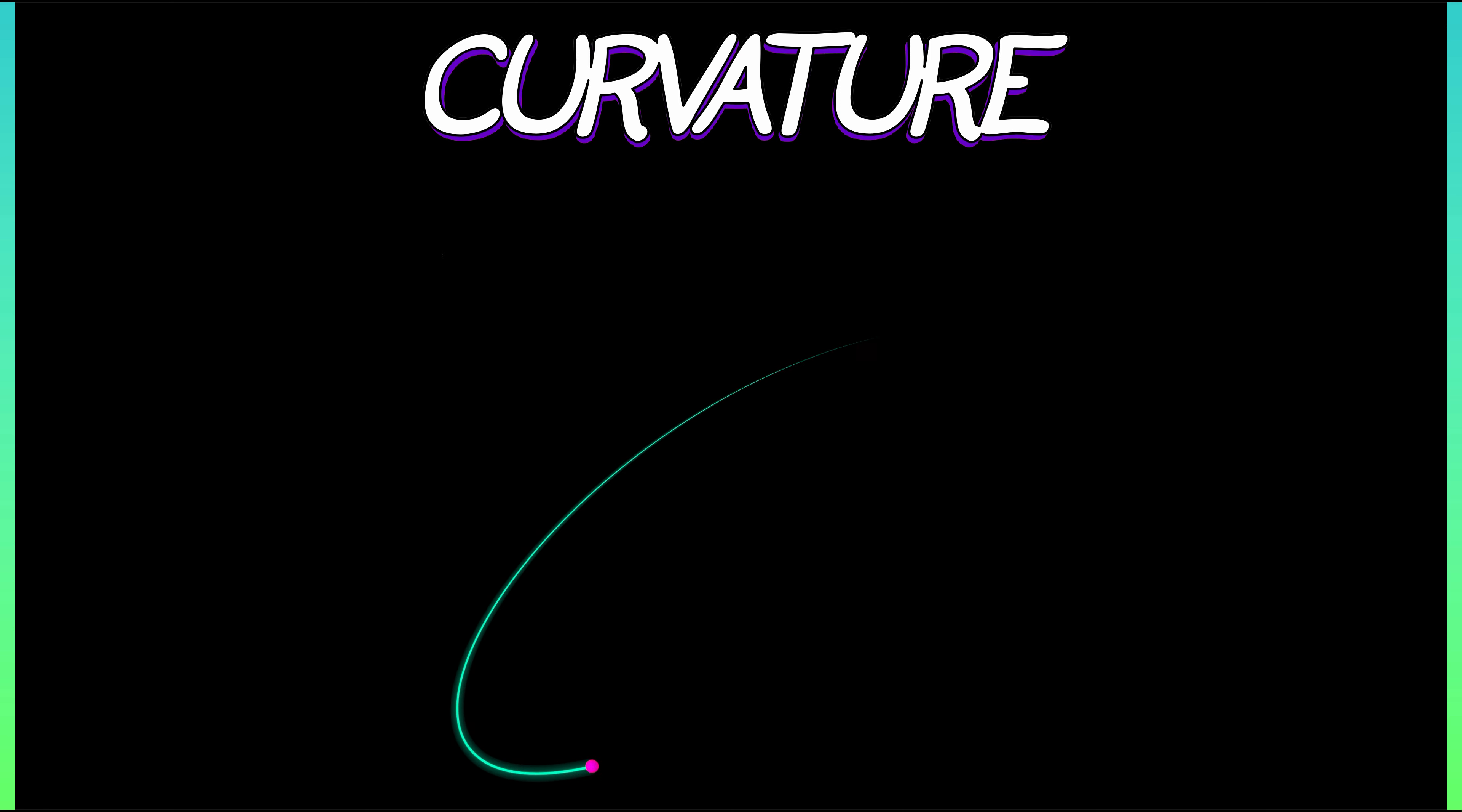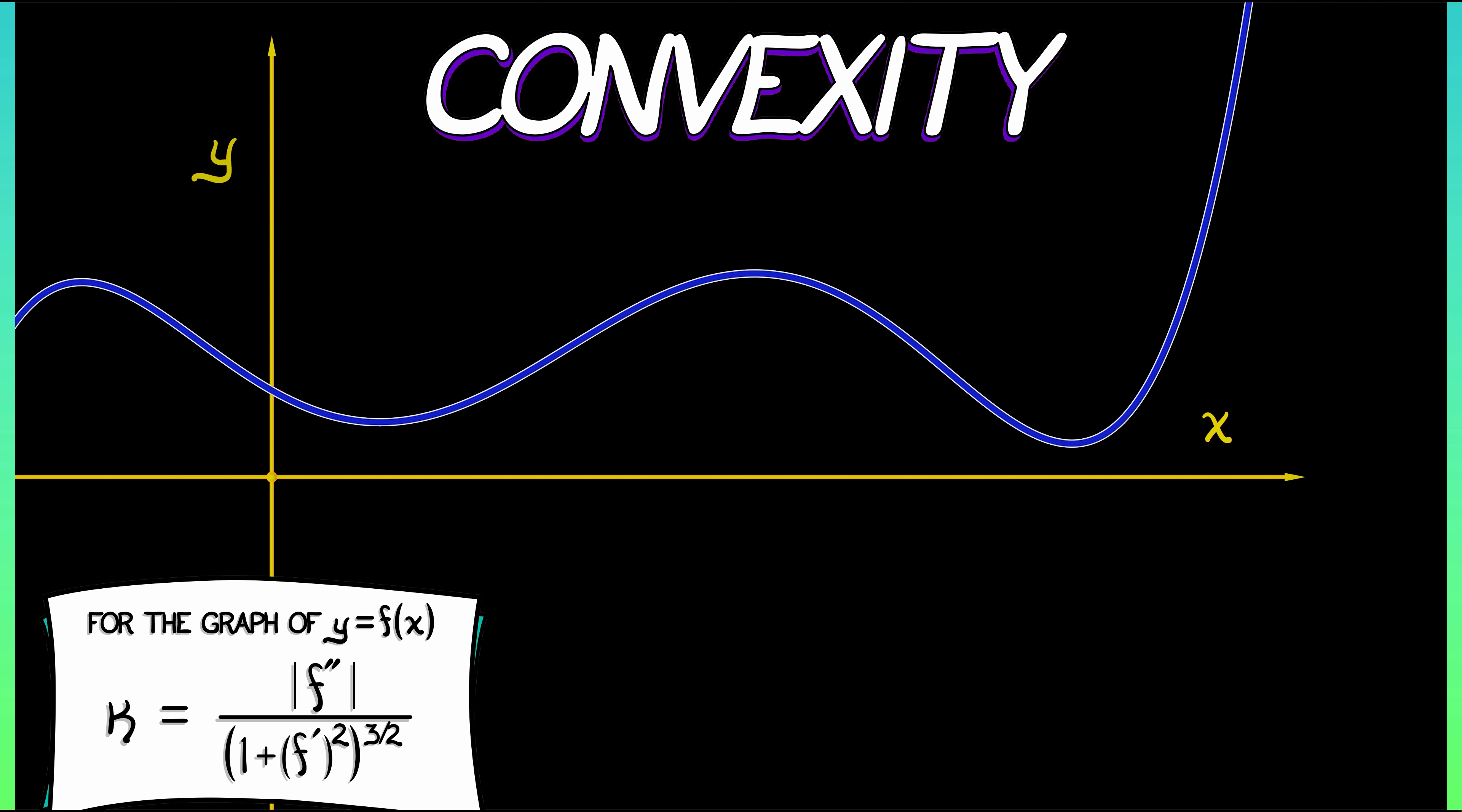But what it captures is that the curvature is related to the first and second derivatives. If we think about that context, where we have a function, y equals f of x, then based on that formula, at the maxima and minima, at the peaks and the troughs, what the curvature is really giving you is the absolute value of the second derivative.